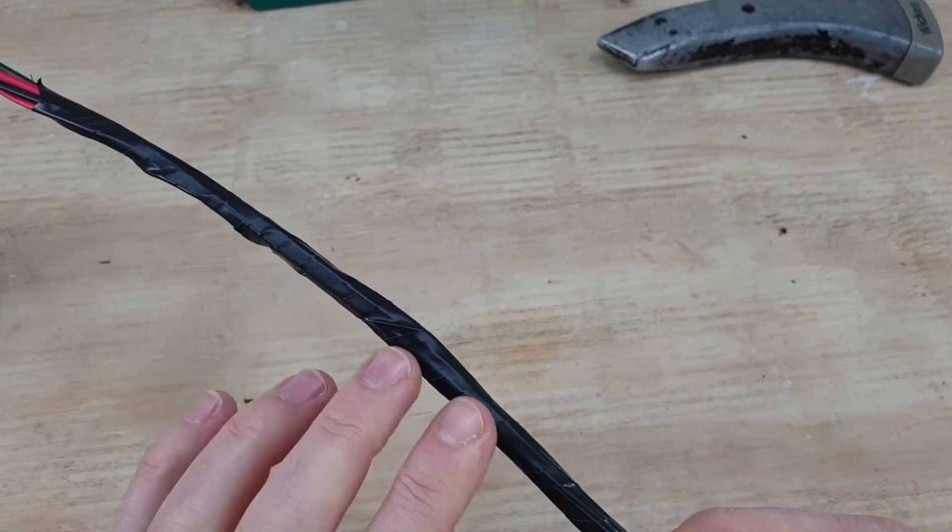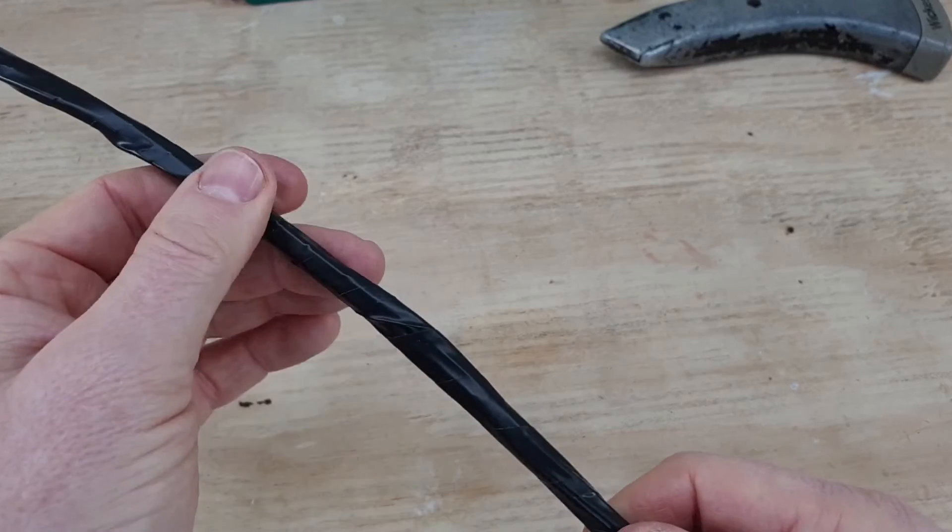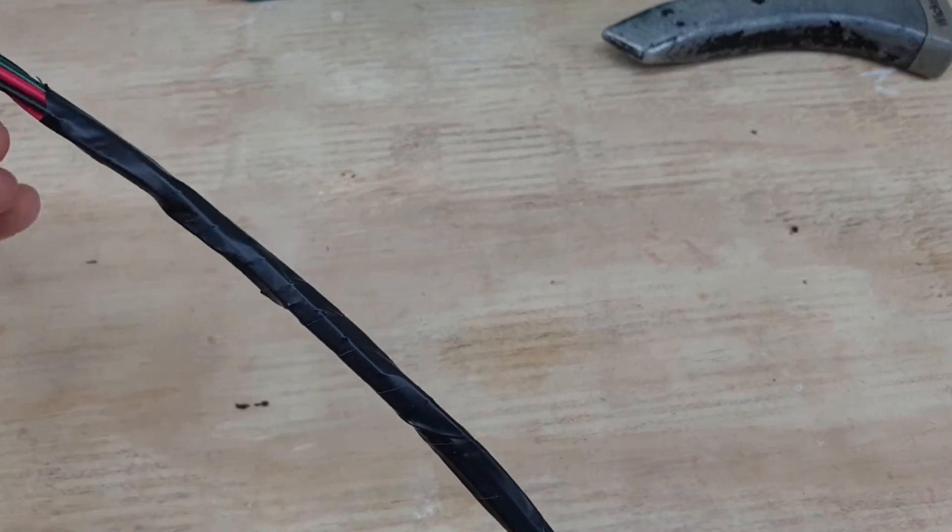So let's look at chopping into a wiring loom. It could be PVC tape, it could be cloth tape, but it's pretty much the same for either.